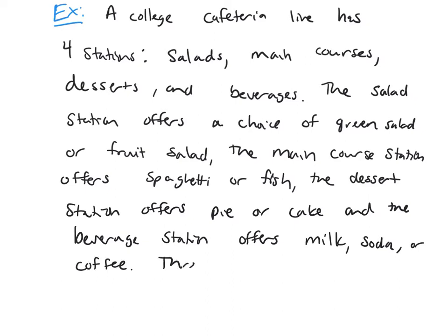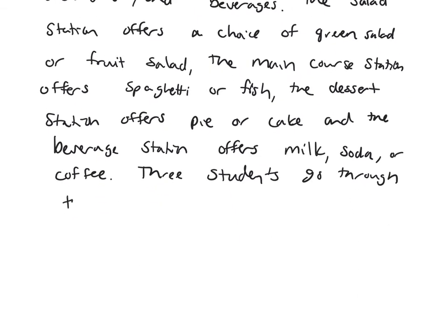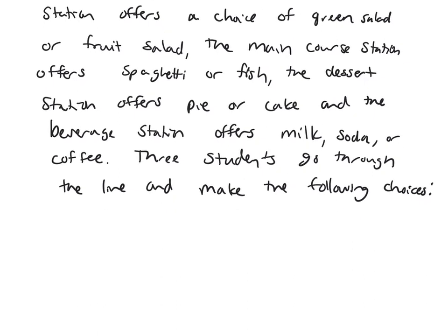Three students go through the line and make the following choices. The first student through the line is Sarah, and she chooses a green salad, spaghetti, pie, and milk.